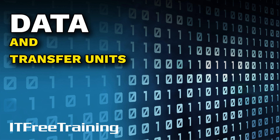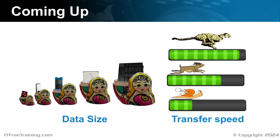Let's have a look at how to tell how big storage is and how fast data is being transferred. In this video, I will look at how we measure data. If you've ever purchased a hard disk and noticed a difference between the amount of space printed on the box and how much space is reported by Windows, I will have a look at why this occurs. I will also look at how to read the two different systems used to measure the size of data.